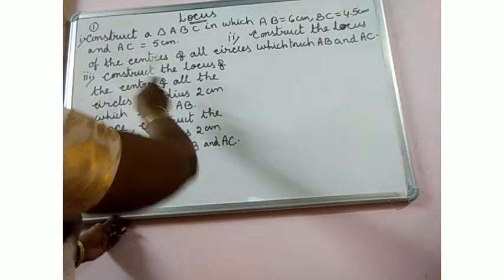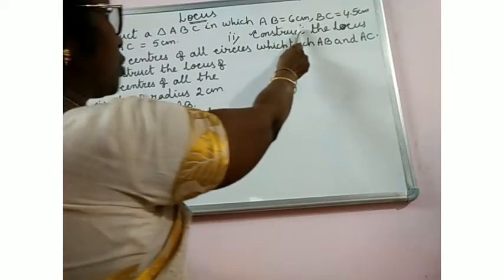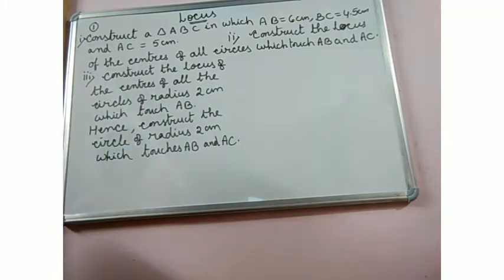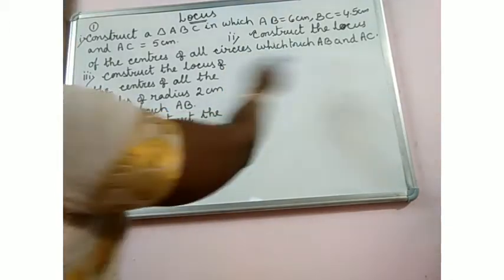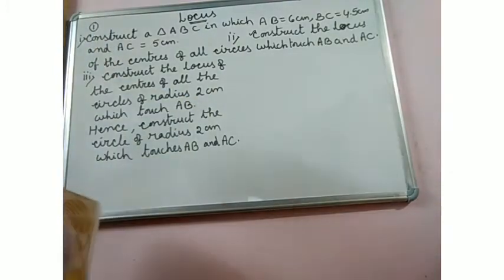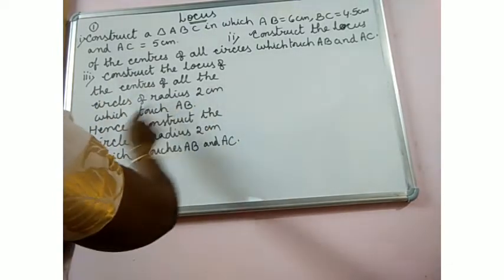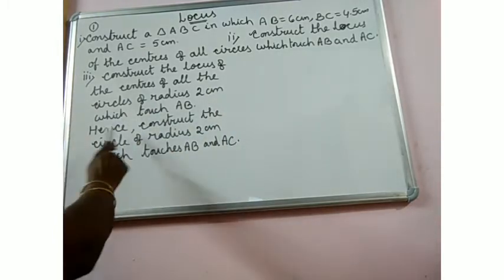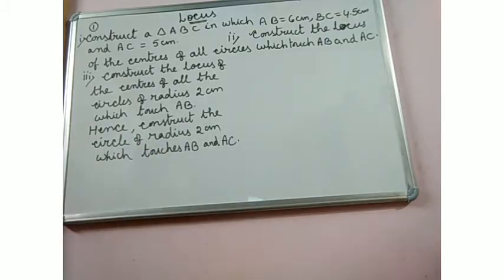Today's construction: construct the triangle ABC in which AB is equal to 6cm, BC is equal to 4.5cm, and AC is equal to 5cm. Second, construct the locus of the centers of all circles which touch AB and AC. Third, construct the locus of the centers of all circles of radius 2cm which touch AB. Hence construct the circle of radius 2cm which touches AB and AC.